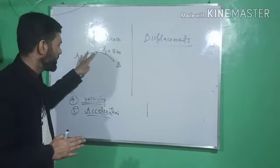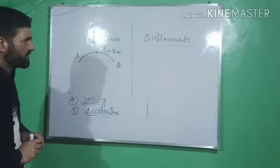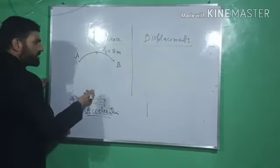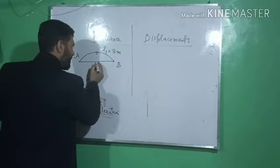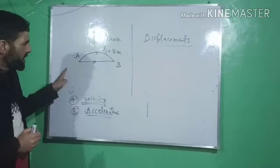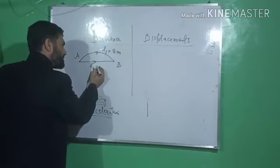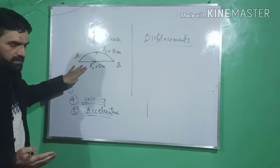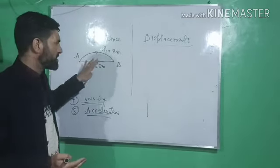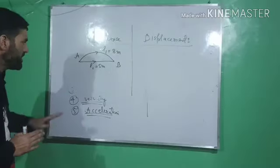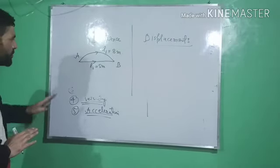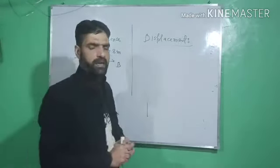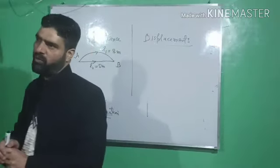Distance is the actual path length traveled by a body between two points in a given interval of time, because the time factor is very important in kinematics. Now, if the body goes along a straight path from point A to point B — along line L2, let's take it to be 5 meters — then the path length between A and B in the second case is 5 meters, which is also the distance.